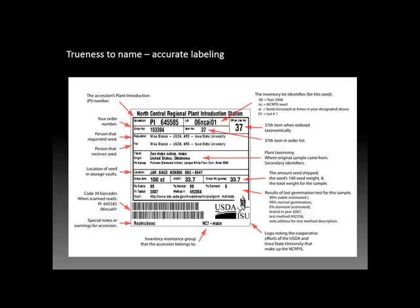A little bit about plant labeling: this is an example of a label for a batch of hybrid corn seed. You can see the very detailed information and the certification that these seeds are true to type, correctly labeled, and the results of the germination tests are published on the seed label.